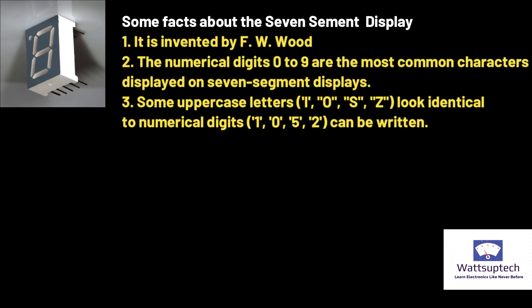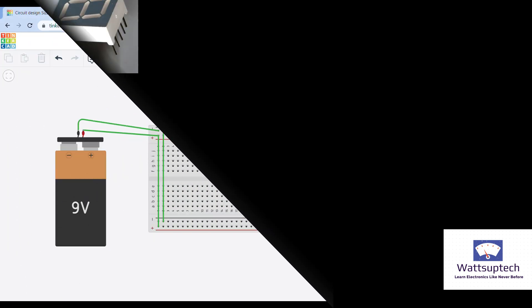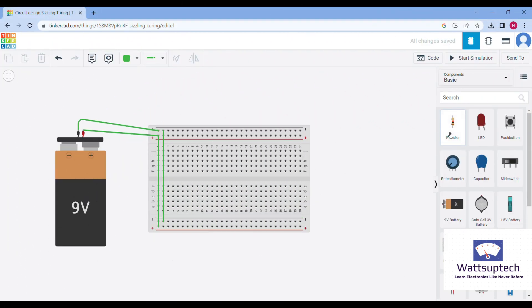Hello friends, welcome to our channel Whatsapp Tech. Some facts about seven segment display: it was invented by F.W. Wood. The most common characters which can be displayed are zero to nine, and also characters like I, O, F can be written on it.